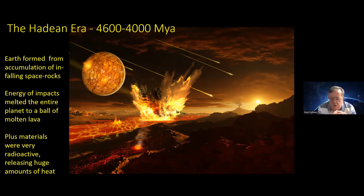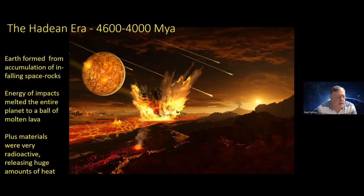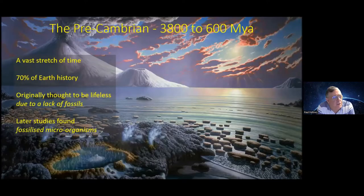The early Earth was essentially a ball of molten lava, and eventually had to radiate that heat away to space to cool down and form a solid surface. Water was likely delivered by infalling cometary material — a mixture of dirt and ice — building up the oceans. By the end of the Hadean period, around 4,000 million years ago, things had calmed enough to enter what is called the Pre-Cambrian era.